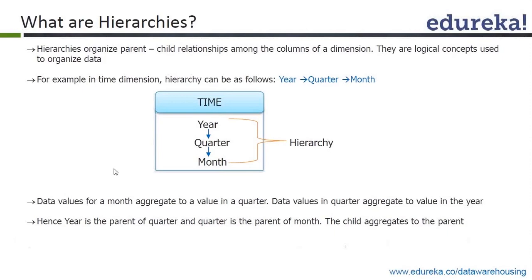The example in this slide is the date dimension, where you have three columns: year, quarter, and month. In the date dimension, these three different columns — year, quarter, and month — have a parent-child relationship between them.